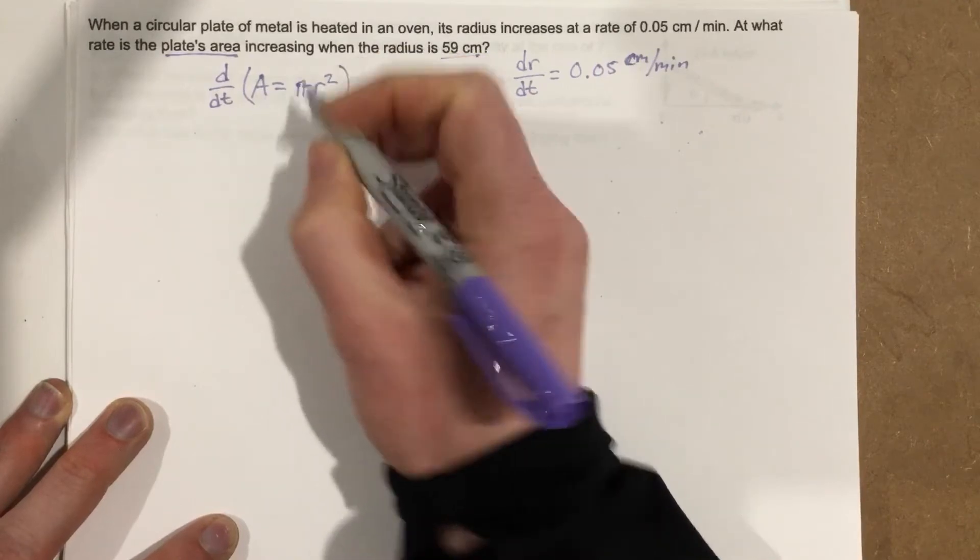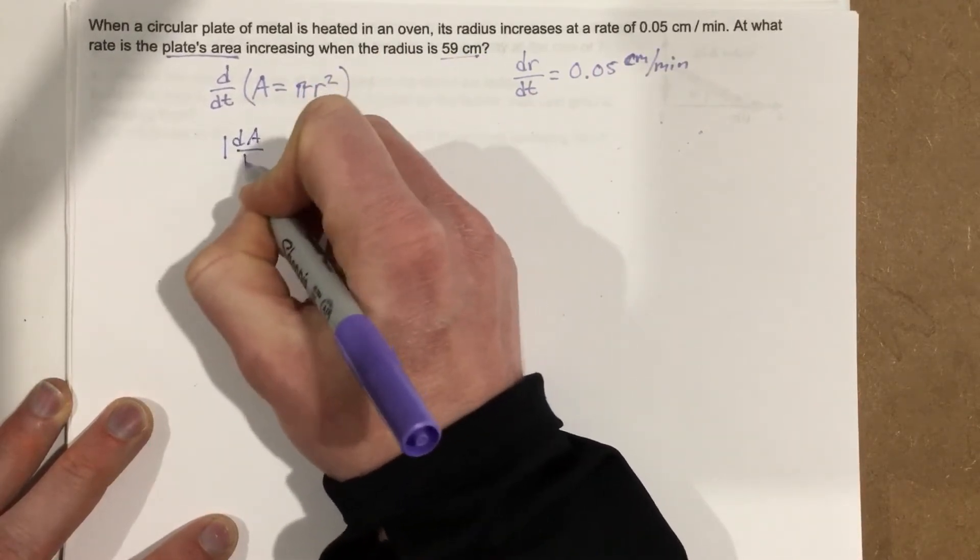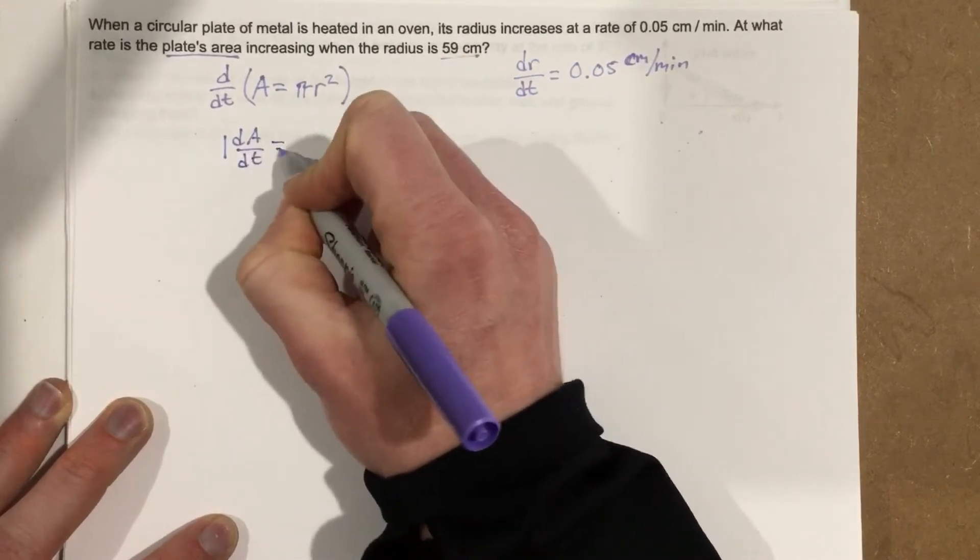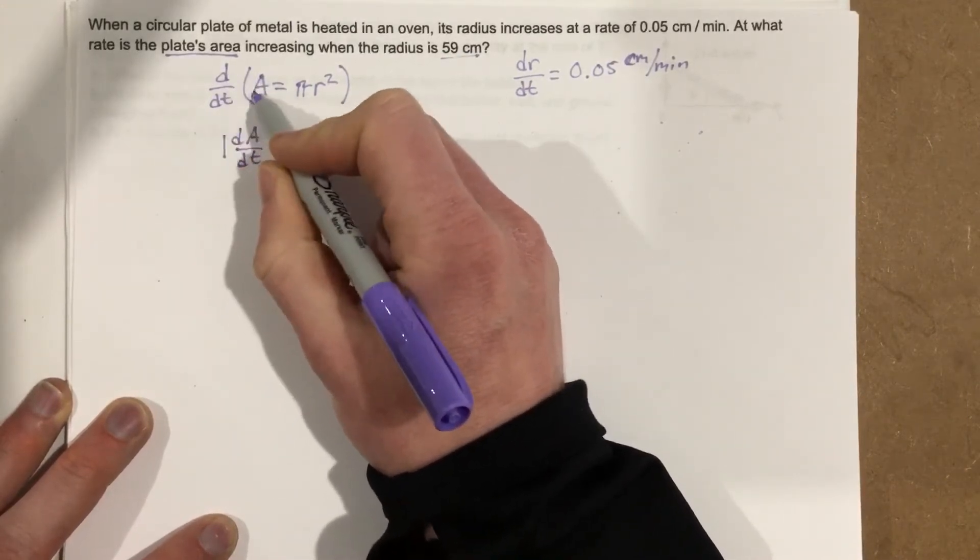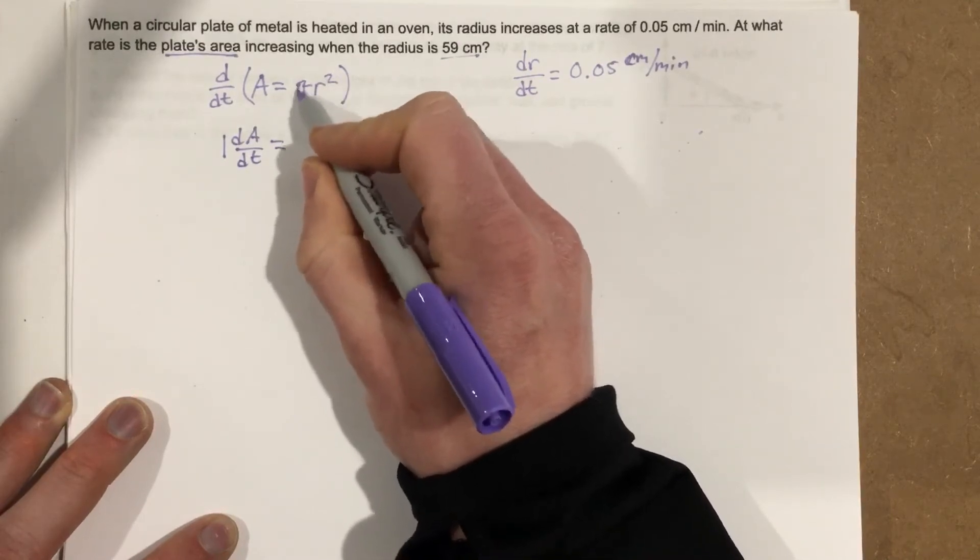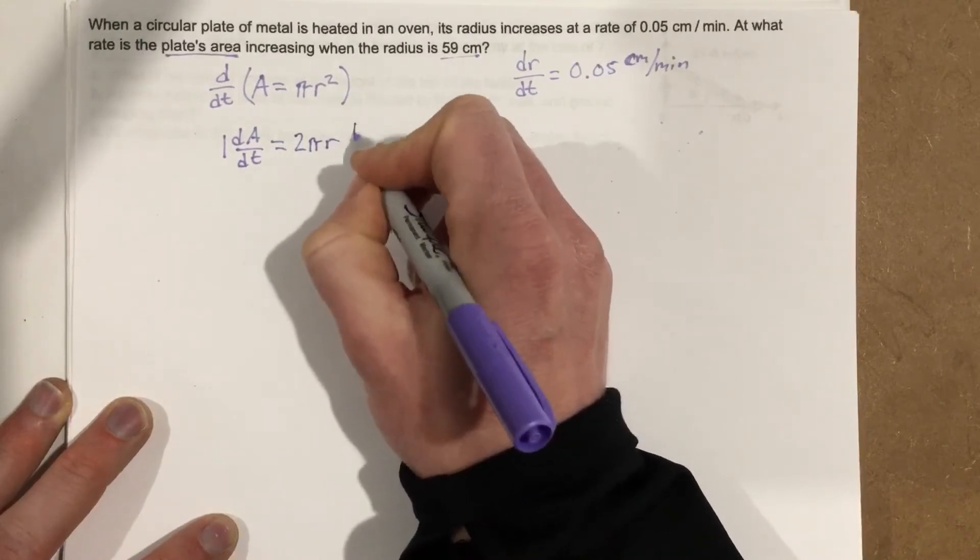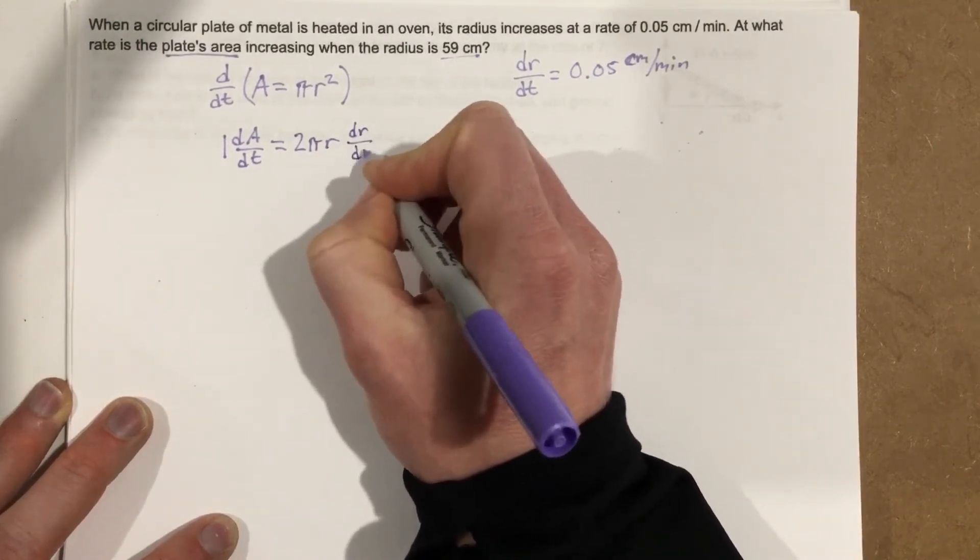So we're going to end up with 1 dA over dt equals, so this is 1 times dA over dt equals derivative over here. Remember, this is a constant. So you end up with 2 pi r and then dr over dt.